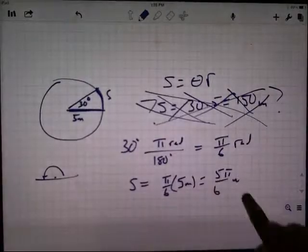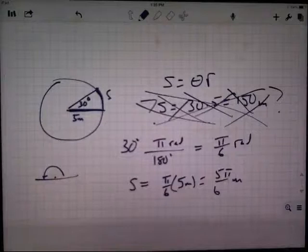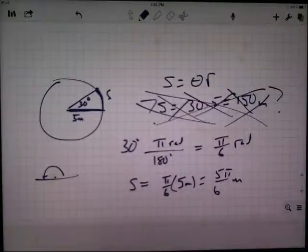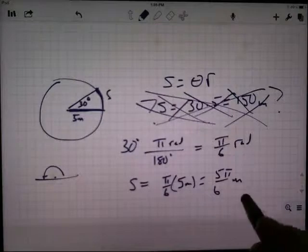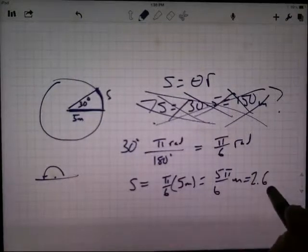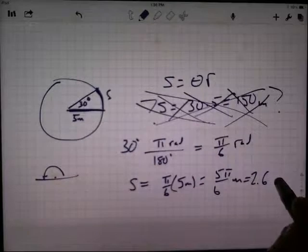And as a decimal, 5, let's turn my calculator on here, 5 times pi divided by 6, it looks like 2.6, 1799, whatever.